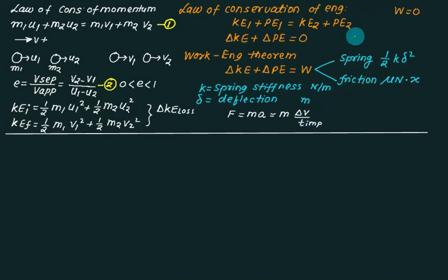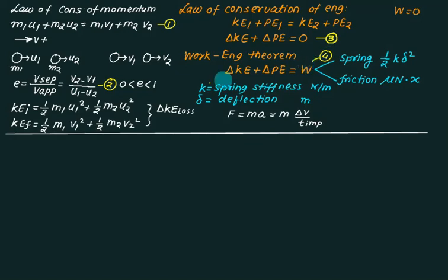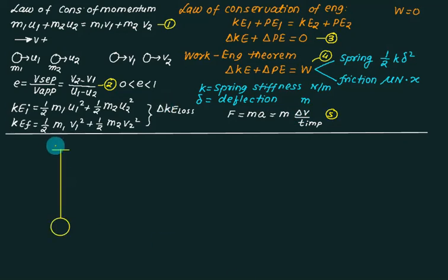These are the key equations for this chapter. Use equations 1 and 3 to find velocity in free-fall cases, and equation 4 for work scenarios. The entire chapter is based on these five basic laws, which are universally true. This chapter is dedicated to systems with no external force.